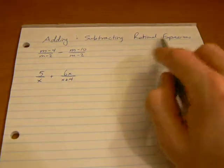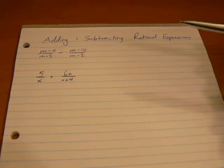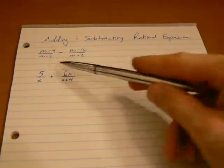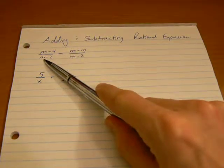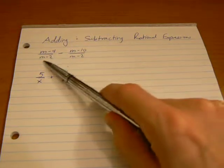Let's look at some adding and subtracting questions for rational expressions that are slightly more complicated. Up till now we've been dealing with ones that have denominators that were monomials. Now we're going to start with this first one here where our denominators are binomials. We've got m-2 here and m-2 in our denominators.